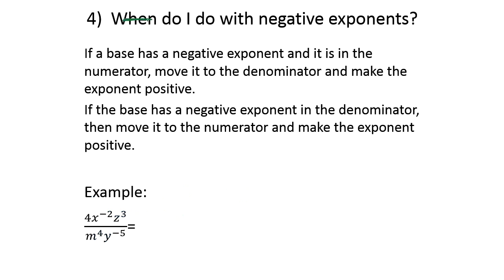The next rule asks what to do when you have negative exponents. When we have a negative exponent, we take the base with the negative exponent and either move it from the numerator to the denominator, or move it from the denominator to the numerator. When you move the base with a negative exponent, it changes the exponent from negative to positive. For example, with 4x to the negative 2, z to the third: the 4 has a positive exponent, so the 4 stays on top.